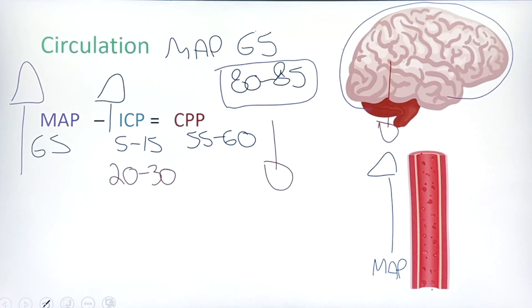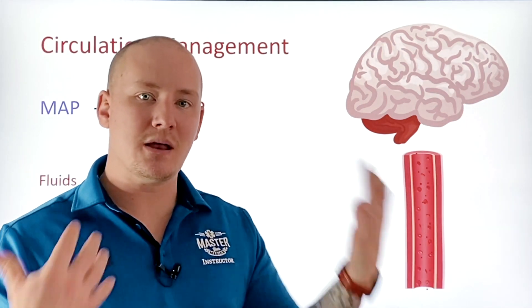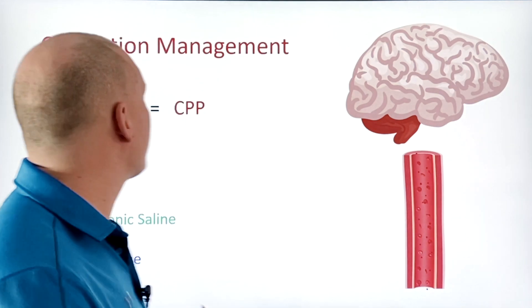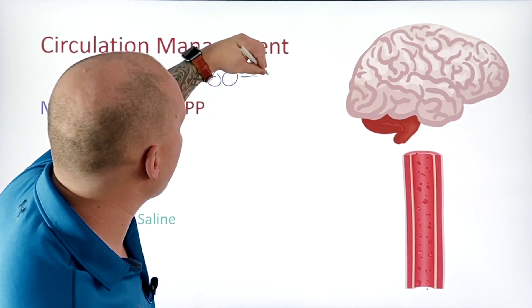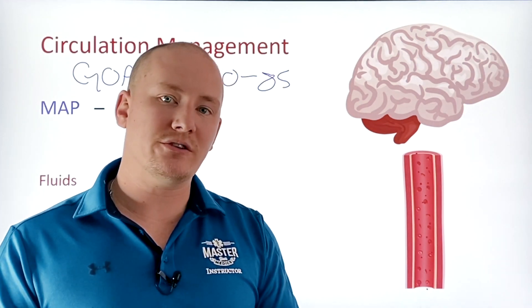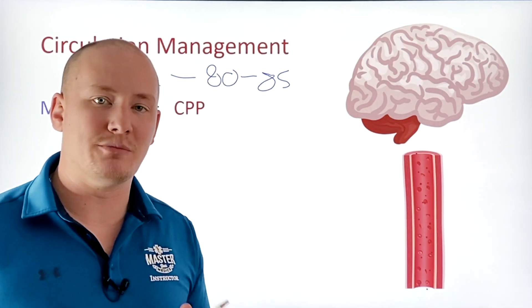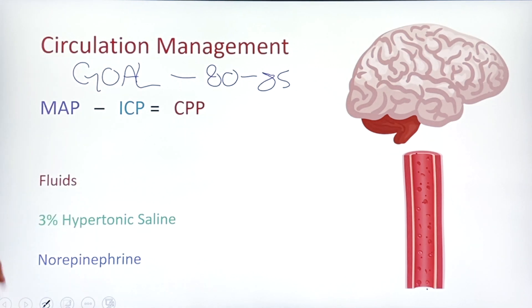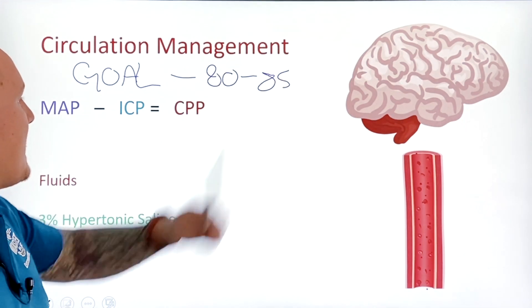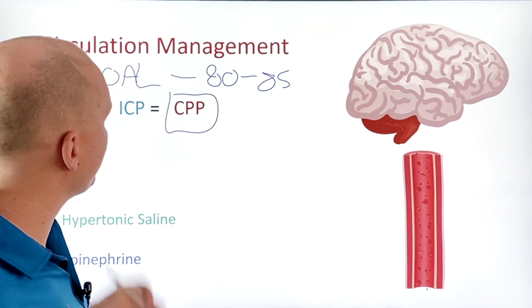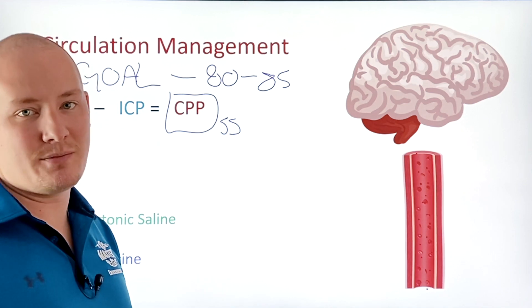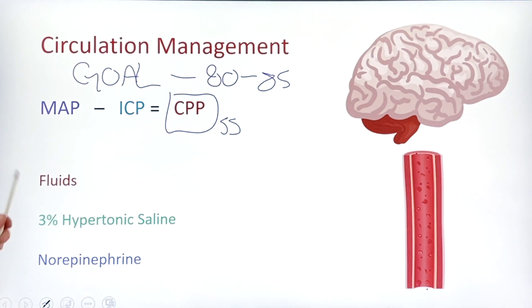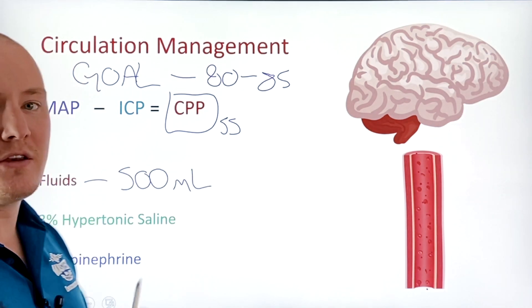So two really big things to watch out for. Now that we understand CPP, ICP, and mean arterial pressures and how they correlate with each other, and why it's so important to maintain higher MAPs in these patients, let's talk about how we can. Our goal is to maintain a mean arterial pressure of 80 to 85. We're going to do it with three different things. First off, fluids. Typically your fluid challenges are going to be around 500 mils.